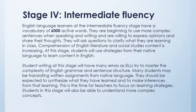Stage four, intermediate fluency, is a tricky stage for many people learning to speak another language. English language learners at this stage have about 6,000 words in their active vocabulary. They are beginning to use more complex sentences when speaking and writing, are willing to express opinions, and will ask questions to clarify what they're learning. Comprehension of English literature, social studies content, and culture is increasing. At this stage, students will use strategies from their native language to learn content in English — and the more complex the language becomes, the more they'll rely on translating directly from their native language. What we want to encourage between stages three and four is for students to learn how to think in English.